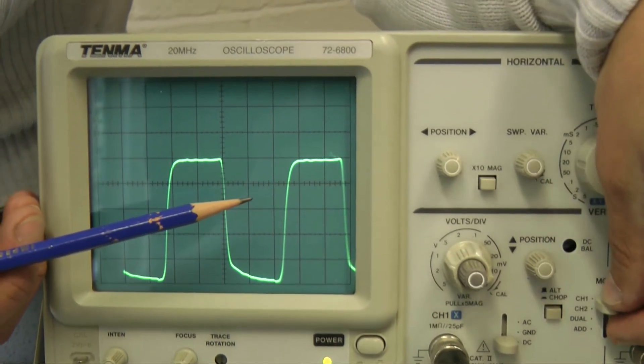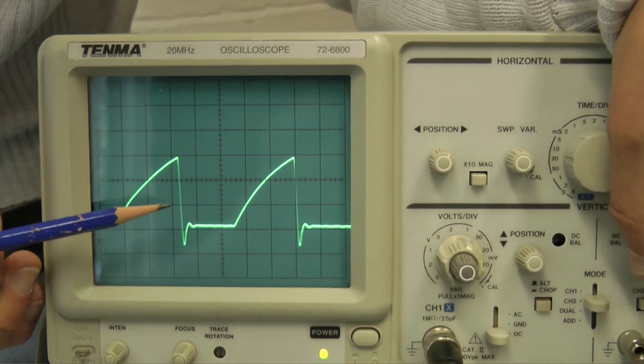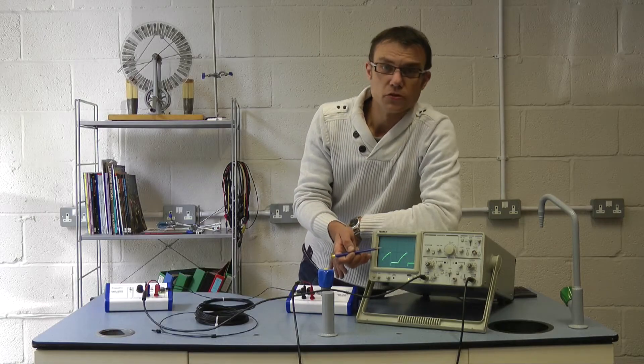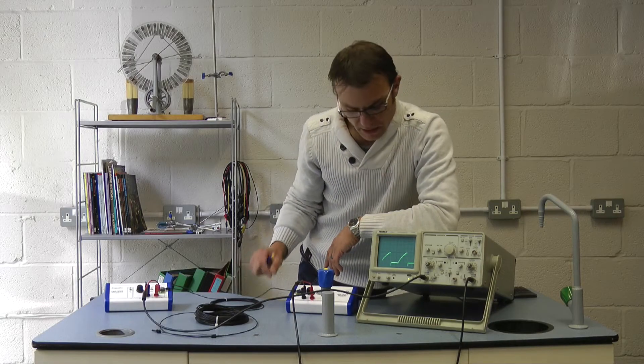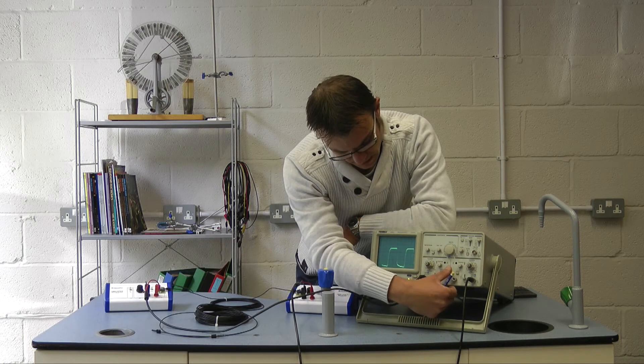If I swap that to channel two, this is the received signal, again it's one megahertz falling here and rising here. You can see there's some distortion, this has traveled five meters down this cable and the transmitted signal is not quite the same as the received signal.